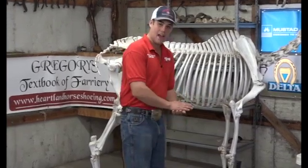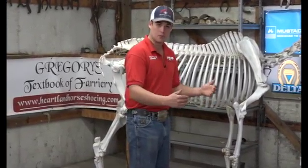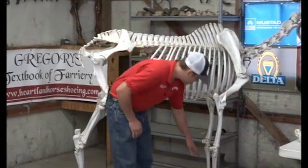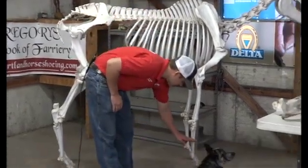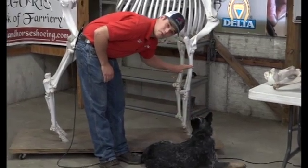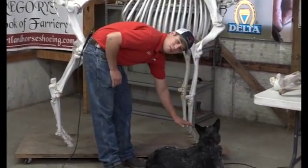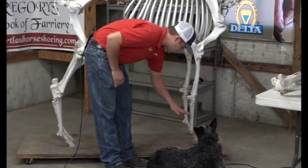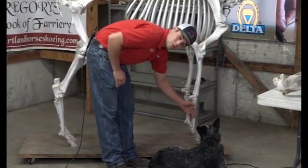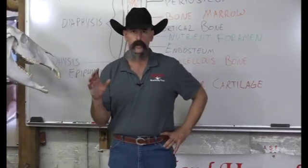Each particular bone has an area that is dorsal or palmer, proximal or distal. Take this cannon bone for example — if we split this cannon bone down the center, everything towards the center of mass is proximal and everything away from that is distal. So this bone has a proximal end and a distal end.